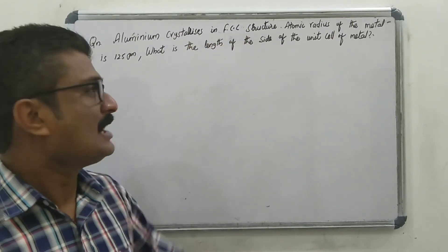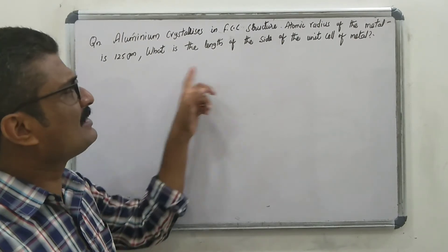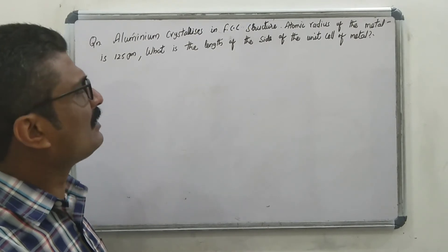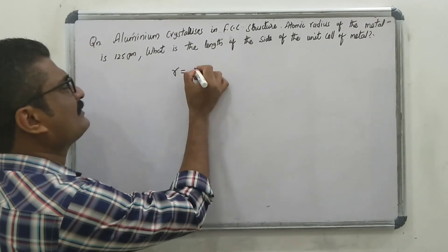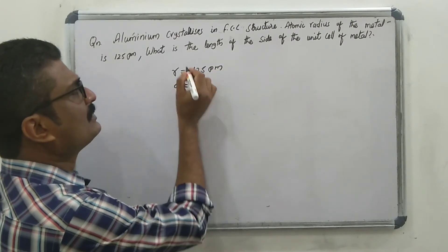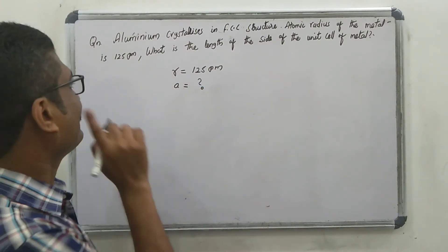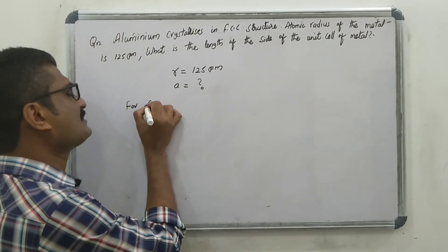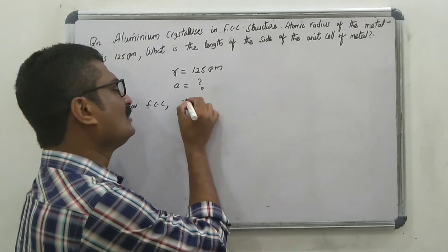Next question: aluminum crystallizes in FCC structure. The atomic radius of the metal is 125 picometer. What is the length of the side of the unit cell? For FCC structure, the atomic radius is 125 picometer and our aim is to find out the edge length A.